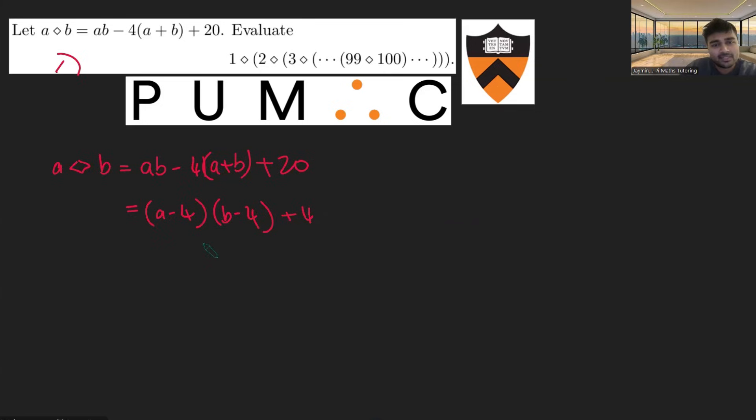What does this tell us? Well, this tells us that if I have A diamond 4, this equals 4, because if I replace B with 4, this bracket just becomes 0 and I get 4.